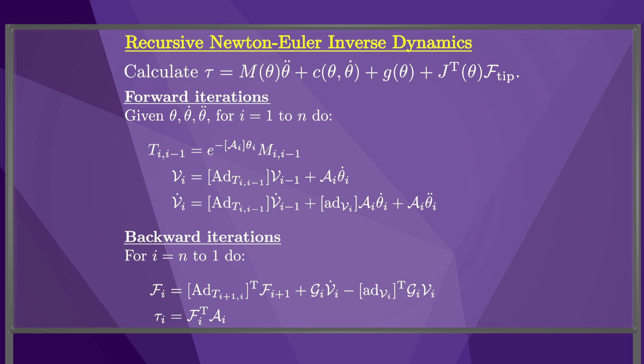One advantage of this algorithm is that it involves no differentiation. Another is that it is computationally efficient due to its recursive nature, where calculation of link i's twist and acceleration uses link i-1's twist and acceleration, and calculation of link i's wrench and joint torque uses link i+1's wrench and joint torque. The inverse dynamics are useful for robot control. For simulation, however, we need to solve the forward dynamics. In the next video, I'll demonstrate one way to use the Newton-Euler inverse dynamics algorithm to solve the forward dynamics.